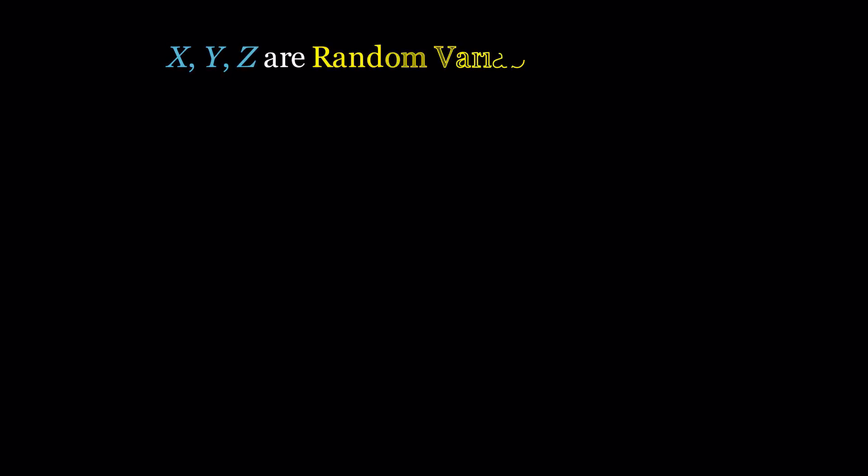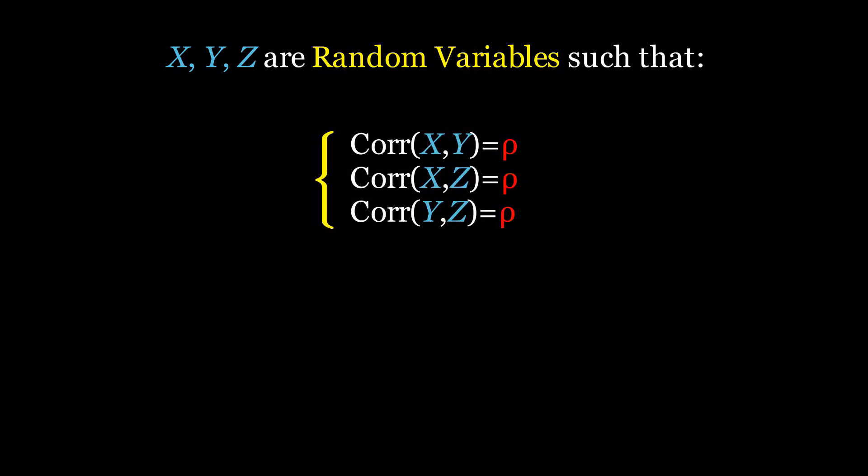x, y, and z are three random variables with mutual pairwise correlation, rho. What is the minimum possible value that rho can take?